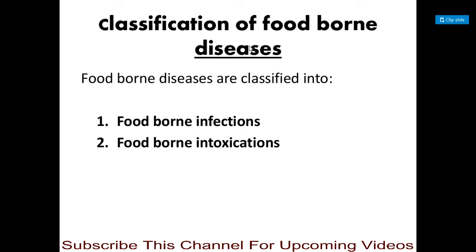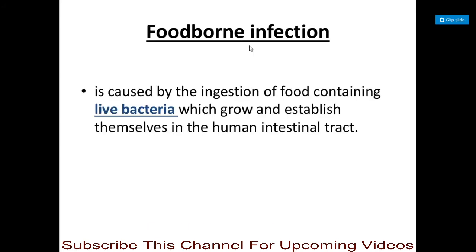Classification of foodborne diseases: these are classified into two types — foodborne infections and foodborne intoxications. Foodborne infections are caused by the ingestion of food containing live bacteria which grow and establish themselves in the human intestinal tract. So, foodborne infection is caused due to the ingestion of foods which consist of live bacteria, and those live bacteria are responsible for the illness.